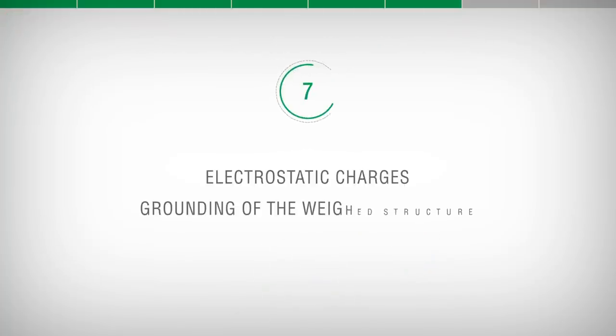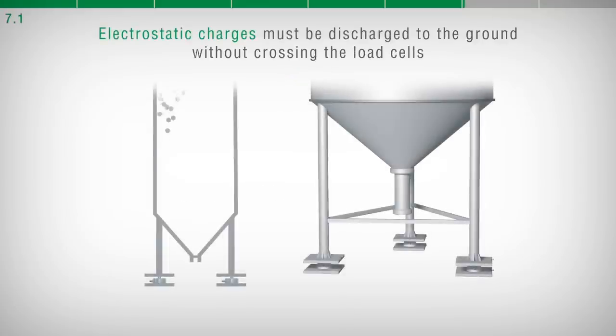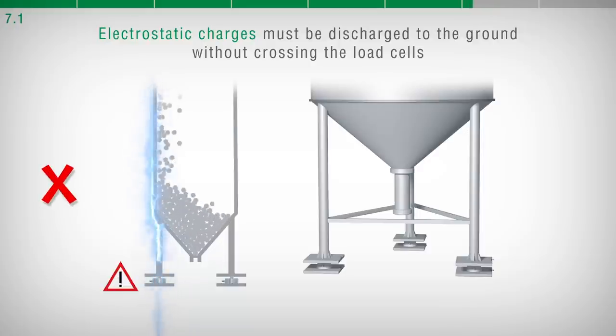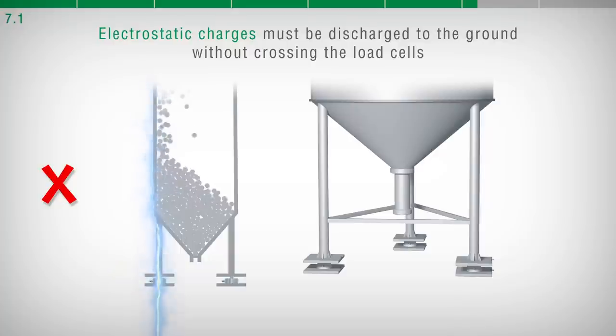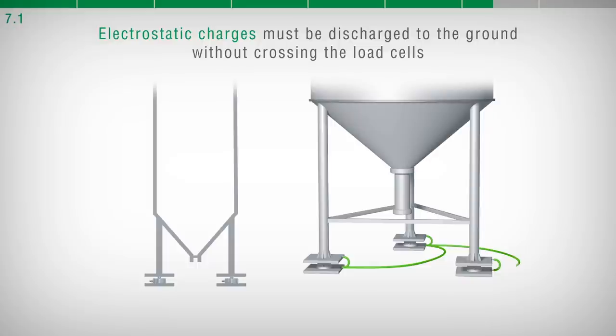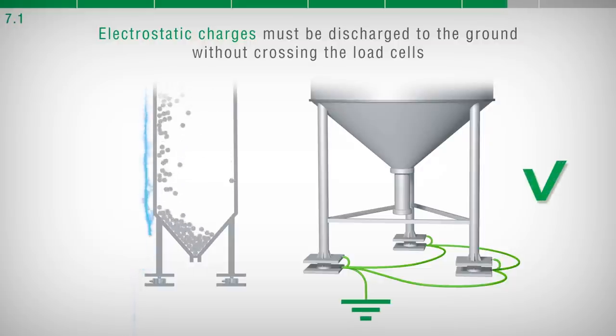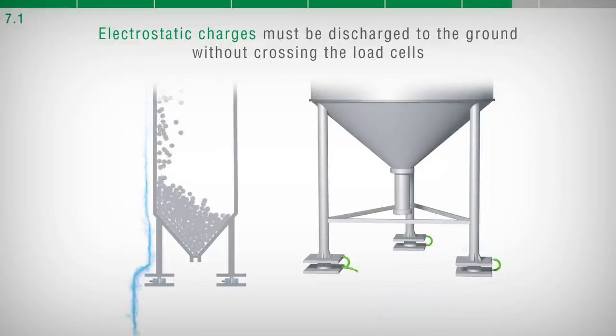Electrostatic charges: Grounding of the weight structure. Electrostatic charges are potentially capable of damaging the load cells. For this reason, it is recommended to connect, by a copper wire of adequate cross-section, the upper support plate of each load cell with the relative lower plate. Then, connect all the lower plates together to the same grounding system. In this way, the electrostatic charges are discharged to the ground without crossing and without damaging the load cells.